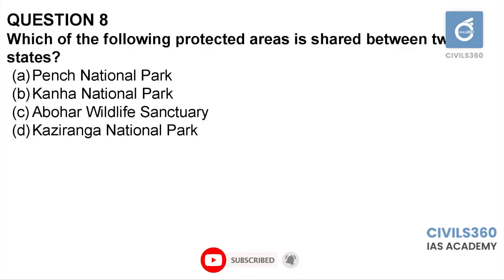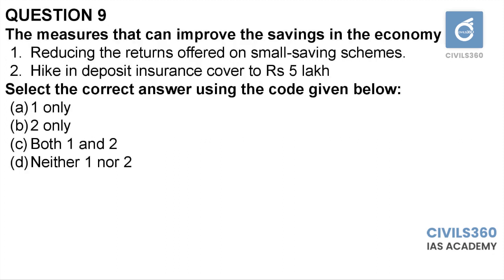Question number eight: which of the following protected areas is shared between two states? Pench, Kanha, Abor, Kaziranga. Pench National Park is actually divided between Maharashtra and Madhya Pradesh, while every other national park listed lies wholly within a single state. Therefore the answer is A, Pench National Park.